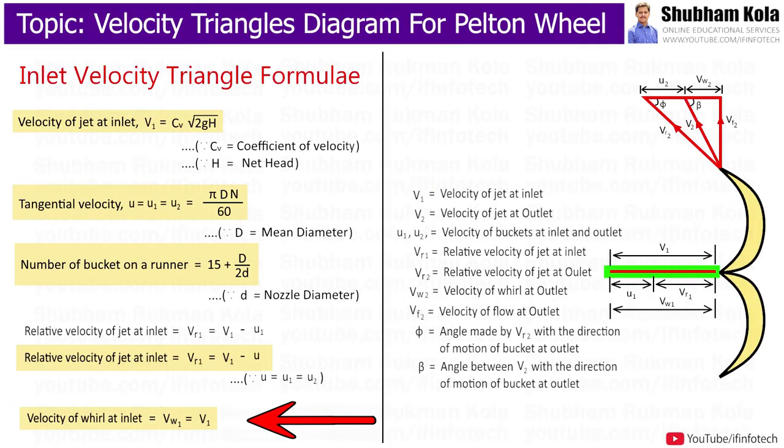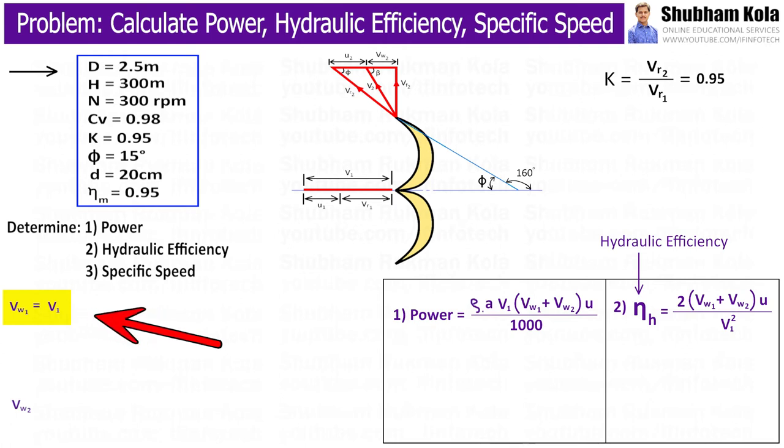In previous video, we have already seen that, for Pelton-wheel turbine, V1 and Vw1 is equal, that means, velocity of jet at inlet is equal to velocity of wheel at inlet. Therefore, Vw1 is equal to Cv into under root 2gH.